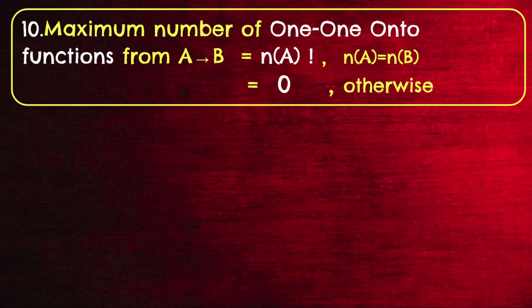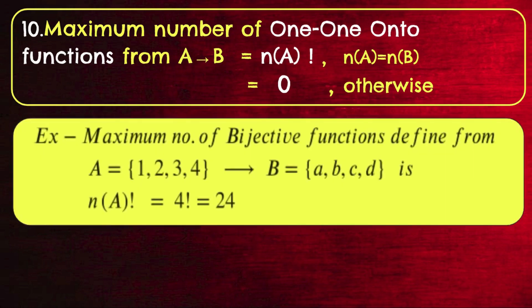Maximum number of bijective functions from A to B: a function is bijective only when N(A) = N(B); then the number of bijective functions is N(A)! = N!. If N(A) ≠ N(B), the number of bijective functions is 0. Example: the maximum number of bijective functions from A with 4 elements to B with 4 elements is 4! = 24.